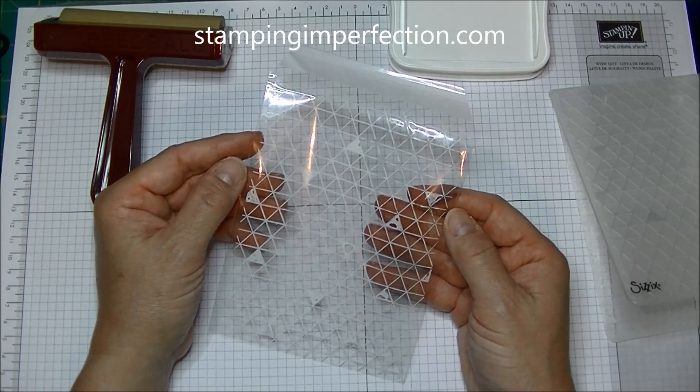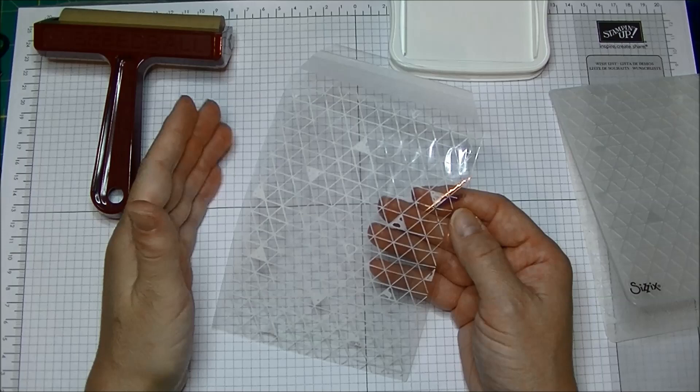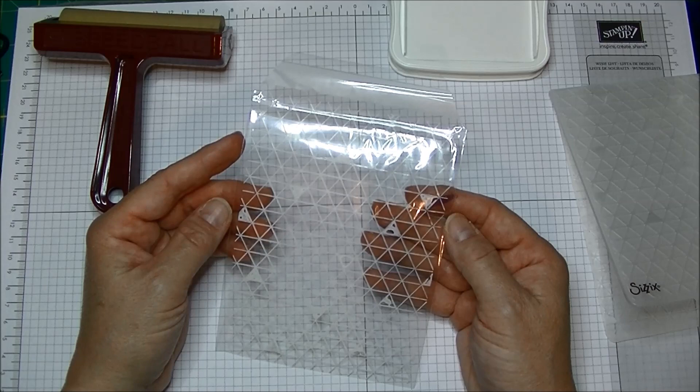You can get the cello bags at mystampingstore.com. The 4x6 size works perfectly if you have them. If not, again, you can get them online at mystampingstore.com.